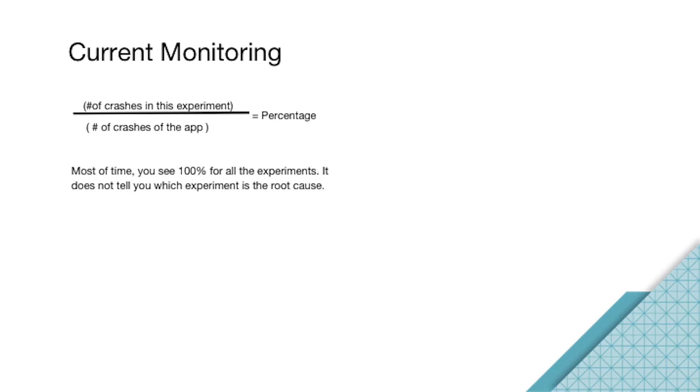The second story is stage rollout. What is stage rollout? Stage rollout is the process where you want to instrument the experiment and hit the target audience gradually from 5 percent, 10 percent, 20 percent, and then 100 percent at the end. We look at Uber's monitoring health system and find they have this formula: the number of crashes in the experiment divided by the number of crashes on the app. What's the problem with this? You would get 100% crash rate for all the experiments. It doesn't tell you which experiment has the root cause and which has the worst situation. We want to change this.